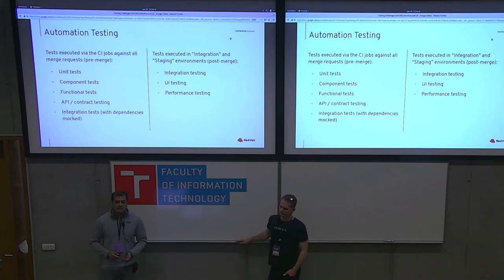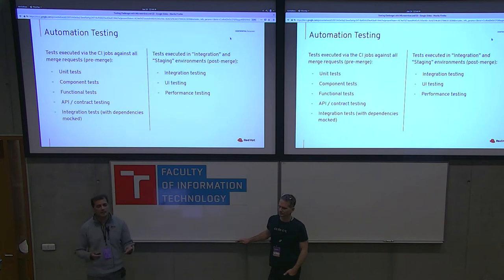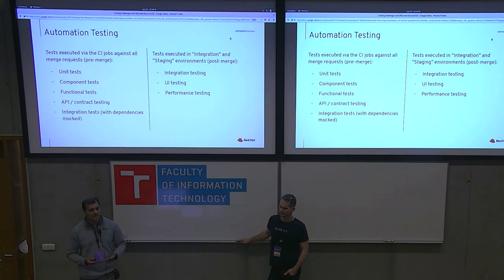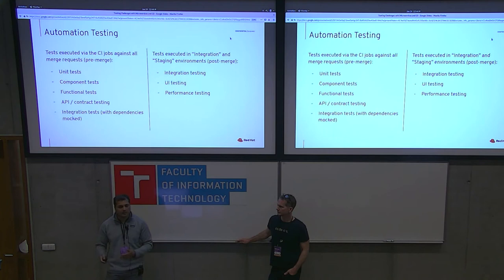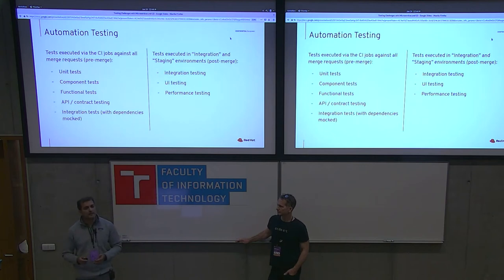Next up is automation testing, divided into two categories: pre-merge and post-merge. Pre-merge testing is executed against each pull request and targets things like unit tests, functional and component testing, API contract testing, and integration testing — possibly with some dependencies mocked. Post-merge testing is done in a pre-prod environment like integration, QE, or staging, targeting integration testing, end-to-end testing, system testing, performance, and UI testing.